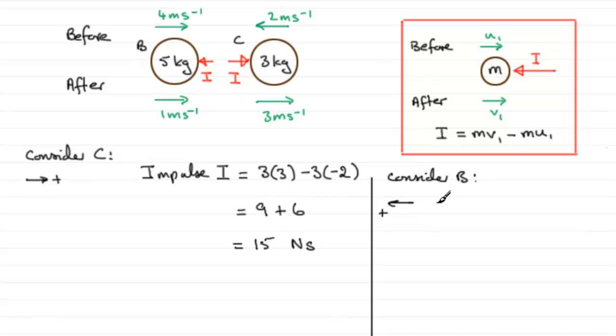So the impulse I would equal the mass 5 times the final velocity. Now it's got a speed of 1 then, going to the right, but this is in the opposite sense to what we've got here. So it would be 5 times negative 1. And then we've got minus the initial momentum. So it would be the mass, which would be 5, multiplied by the initial velocity. So we've got 4 meters per second. It's in the opposite sense to our plus here. So it would be 5 times minus 4.